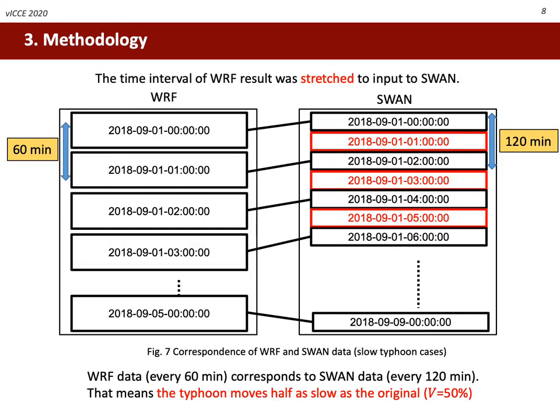In order to make a slow-moving typhoon, the WRF data should be stretched. In this figure, the WRF data is aligned every 60 minutes, but they are extended to every 120 minutes for SWAN's input. This modification essentially means the translate speed was halved. In this case, it should be expressed as 50%.